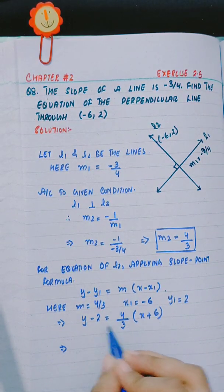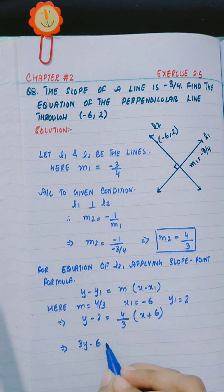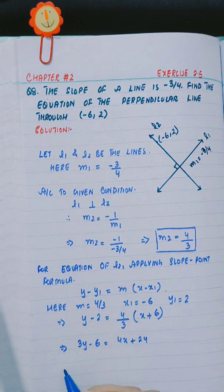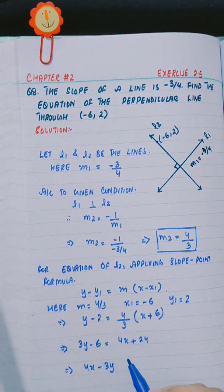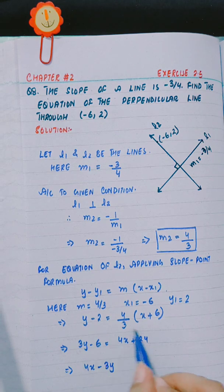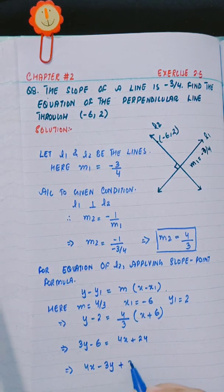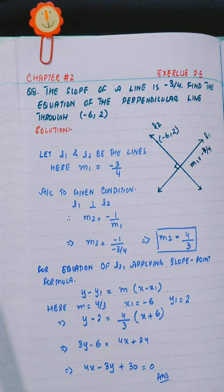Y minus 2 is equal to 4 by 3 into X minus minus 6, which is X plus 6. Expanding: 3Y minus 6 is equal to 4X plus 24.